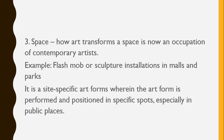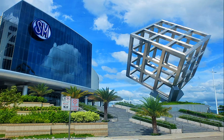The third element is Space. How art transforms space is now an occupation of contemporary artists. Examples include flash mobs or sculpture installations in malls and parks. It is a site-specific art form wherein the art is performed and positioned in specific spots, especially in public places. This is SM Seaside in Cebu — the space element here is the cube structure made for entertainment.